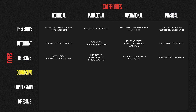Corrective controls respond to and fix security incidents or vulnerabilities after they've been detected. A technical example is patching vulnerabilities in an operating system or application. Managerially, an incident response plan outlines roles, responsibilities, communication protocols, and actions to contain and eradicate a threat. Operationally, a disaster recovery plan can restore business operations after fire, flood, or a security incident. Physically, fire suppression systems like sprinklers can put out fires.